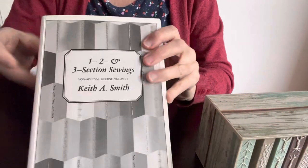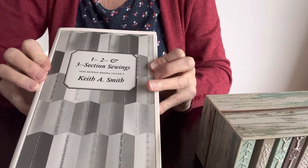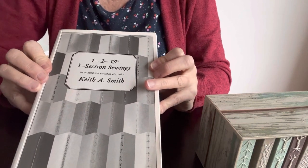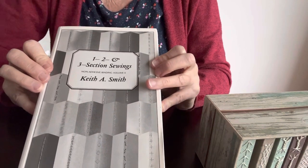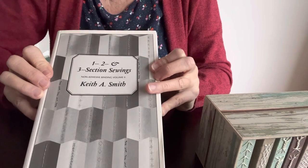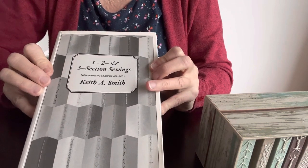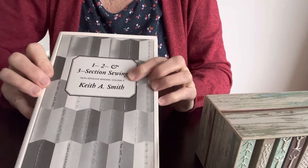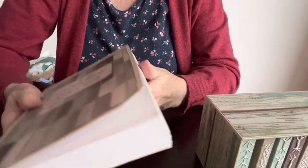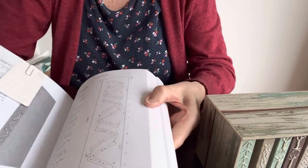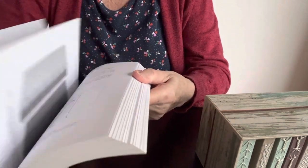This is his book, One, Two and Three Sections Sewings. It's one of the six books he has written about non-adhesive bindings. This is volume two. It is a very nice book, it has all kinds of schemes in it so that you can make the bindings.